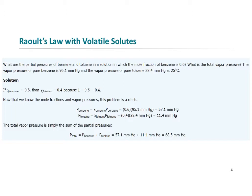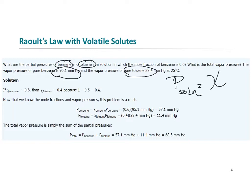Here's an example where we have two volatile components: a solution of benzene and toluene. You might not know off the top of your head that they're volatile, but if you read the question carefully, you can tell because they give us the vapor pressure of both of them. So you have to calculate the contribution of the vapor pressure from each of those two components. Using Raoult's Law, the vapor pressure of the solution equals the mole fraction of each component times its pure vapor pressure. We need to find the mole fraction of each component.